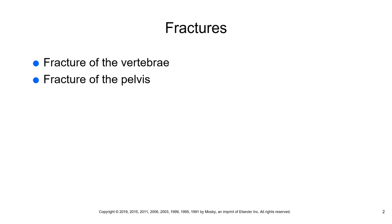There are different types of traction in your book: Buck's traction, Russell's traction, skeletal traction, and balance suspension traction. Pictures of these are located toward the end of the chapter. The page number isn't cited here because editions change, so just locate those pictures in your book.